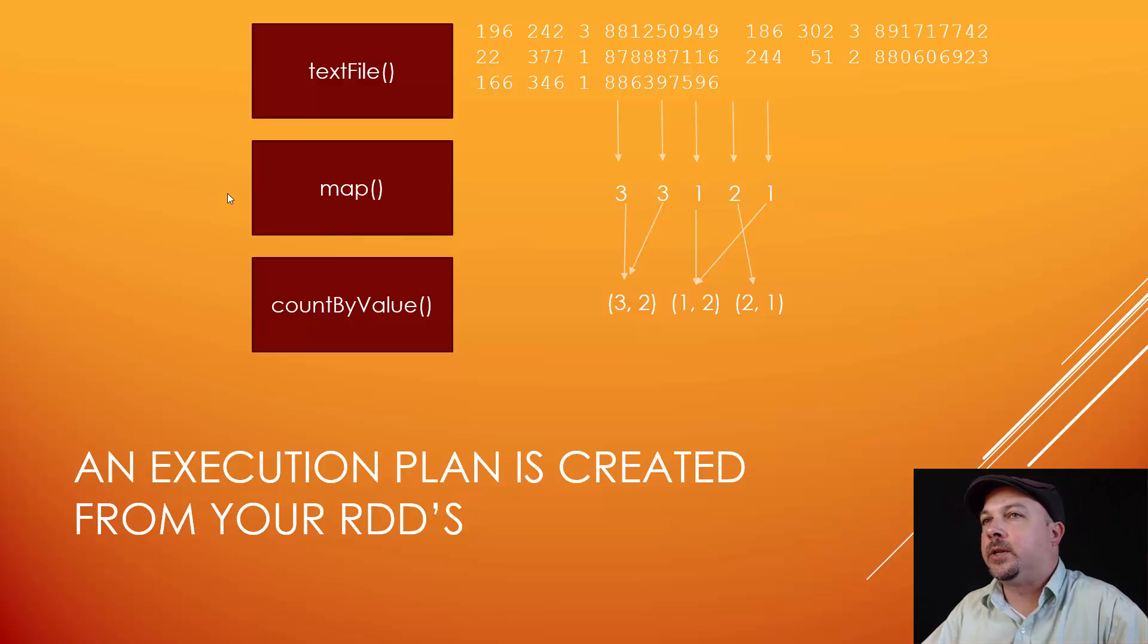Basically, we start with a text file command that imports raw data into an RDD. We then map that RDD to parse out the information that we care about, which is just the ratings themselves. And then finally, we call the count by value action to total up all the different numbers of each rating type. So that's the execution plan.